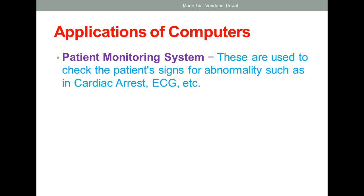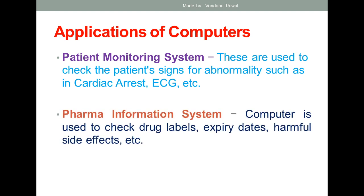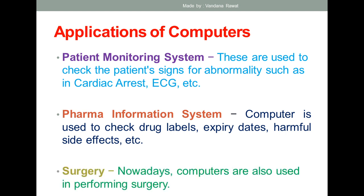In pharma information systems, computers are used to check drug labels, expiry dates, manufacturing dates, and harmful side effects. Computers are also used for performing surgery — nowadays computers assist in surgical procedures as well. These are all the applications of computers in terms of healthcare.